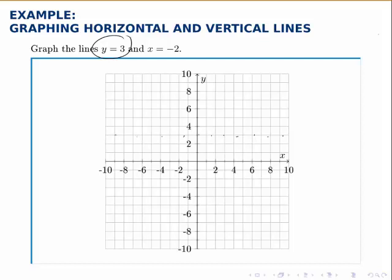So the line y equals 3 is a horizontal line because it's all the points with a y coordinate of 3, and it's a horizontal line at 3, of course.